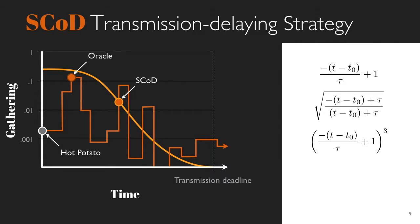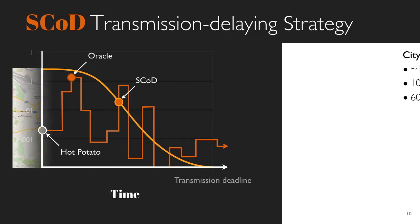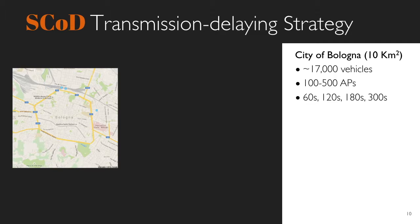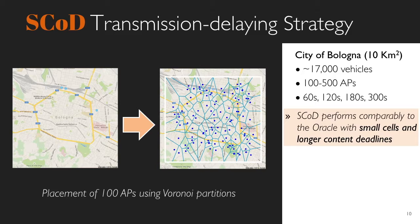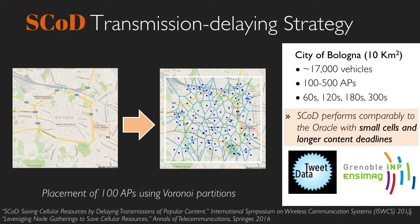In our performance evaluation, we tested several decreasing functions. To evaluate SCOD, we used the Bologna dataset, which accounts for the movements of 17K vehicles. We propose a deployment plan of access points for the center of the city of Bologna, covering a geographical area of 10 square kilometers. We vary the size of the cells by increasing the total number of access points from 100 to 500. The deployment plan results in a Voronoi tessellation, shown here for 100 access points. Our results show that SCOD performs comparably to the Oracle strategy, and that performance improves with smaller sized cells and for content with longer deadlines.